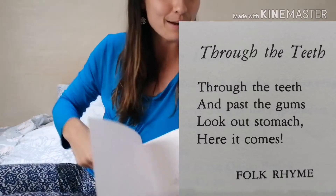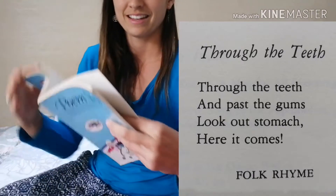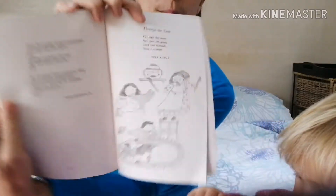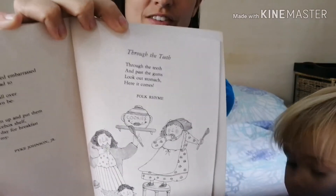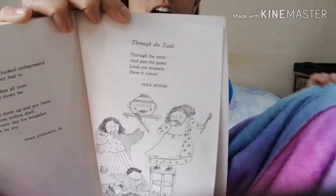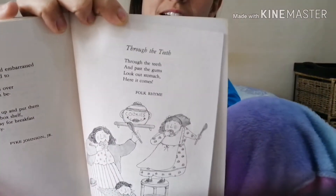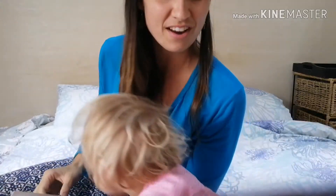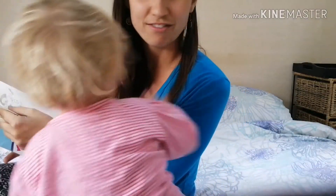It's called 'Through the Teeth,' and it's a nice rhyme to learn because it's very short but very fun. Your mums and dads can see it — and grannies too.